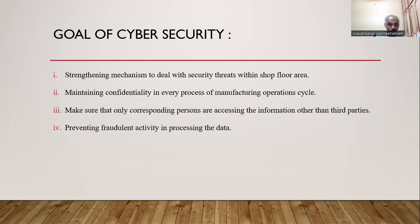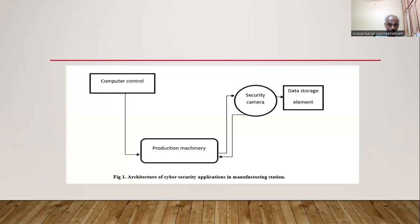What are the primary objectives of cyber security? It is one of the strengthening mechanisms to address various security threats within the shop floor area, maintaining confidentiality and safety in every process of the manufacturing cycle. It ensures that only the corresponding authorized persons can access the basic information, not any third party, and it prevents fraudulent activity in processing information. This is the general flowchart framework explaining the architecture of cyber security application in a manufacturing station.